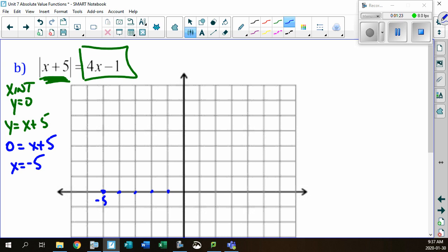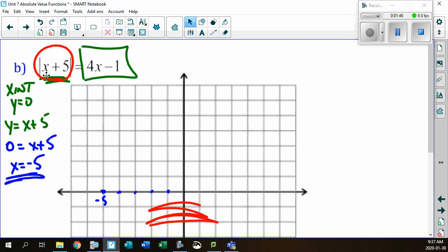Beautiful. And remember, that becomes our critical point when we're doing this too, because that's where the graph is going to bounce. Remember, it bounces off the x-axis to make that nice, beautiful v-shape. We can't have anything below the x-axis because this is an absolute value function.